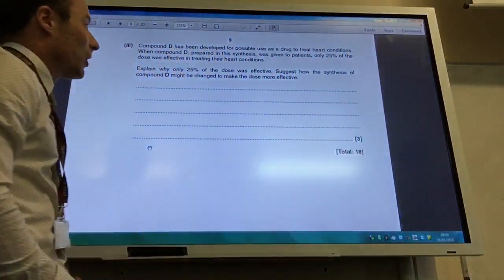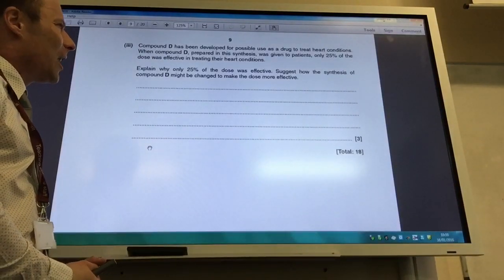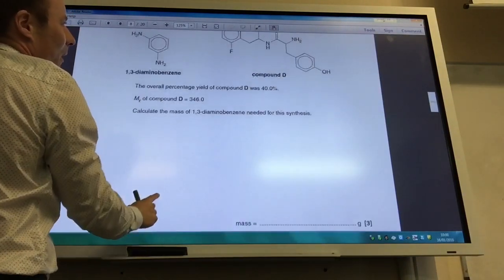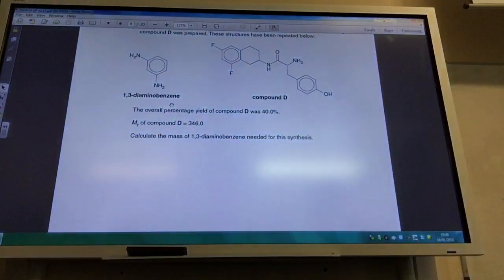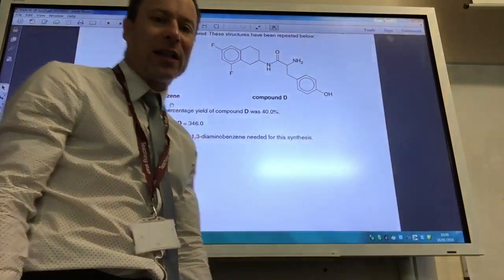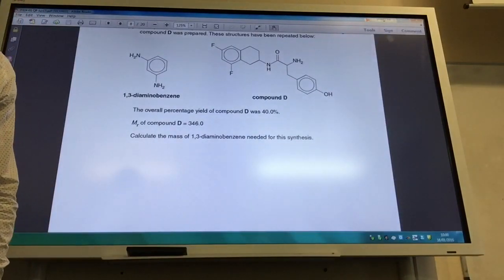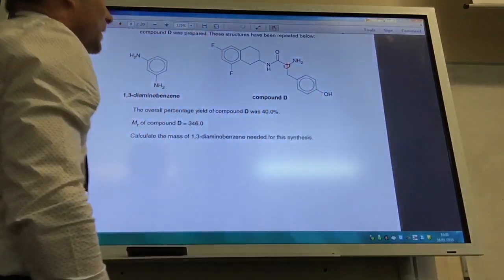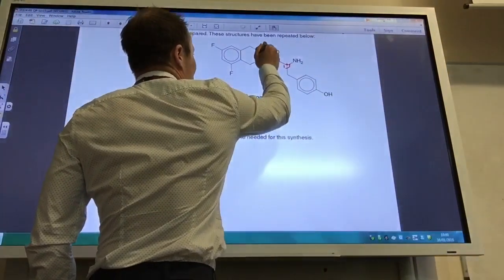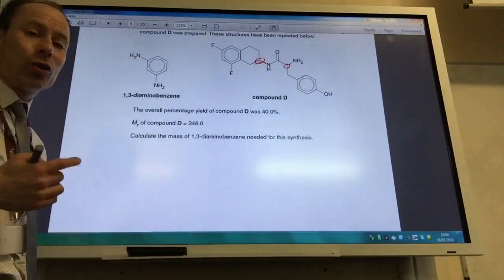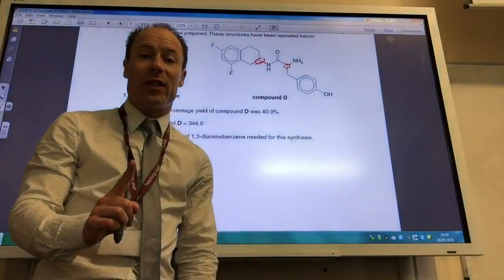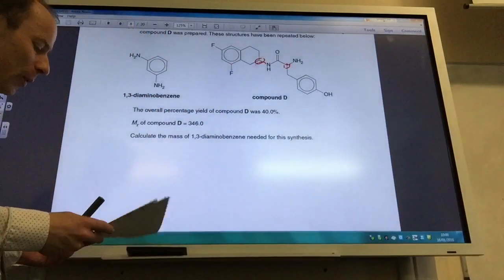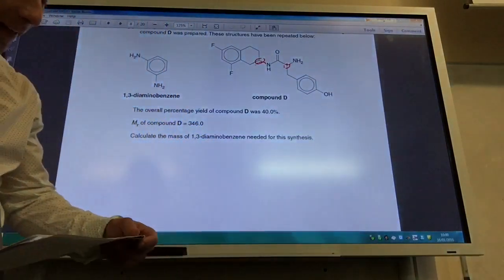So compound D has been developed for oral use as a drug to treat heart conditions, but when they made compound D, only 25% of the dose was actually effective. Why is that? Let's go back and look at D. What can you see? When you're thinking about being effective drugs, you should think about optical isomerism. Can we spot some chiral centers in here? We have got a chiral center here because he's attached to four different groups, and you've also got a chiral center there. So I've got two chiral centers in the molecule. For every one chiral center I get two isomers. I've got two chiral centers, that means I get four different optical isomers, which is why only 25%, only a quarter of the drug, is actually effective.